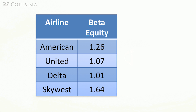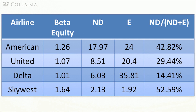They might have different levels of debt, and that might be explaining the variation in their betas. Let me add to the table a measure of these firms' capital structures. I am showing you the value of equity of each of these firms, also called market capitalization. Net debt is defined as the amount of total debt the firm owes minus the amount of cash that it holds. What matters for the financial risk of the firm is not the total amount of debt, but rather the net debt.